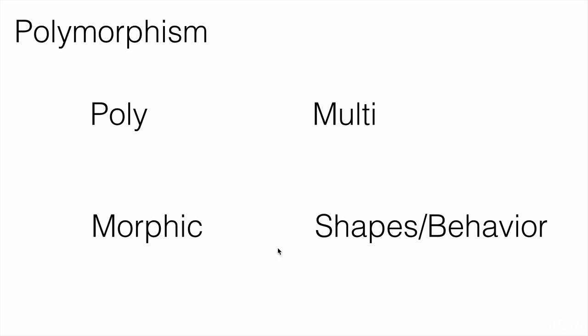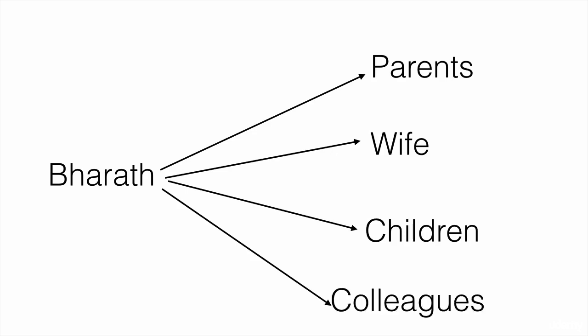To leave you with a real-life example, me, Bharat, as an object, when I interact with my parents or when I interact with my wife, children and colleagues, I behave differently. So the same object can output different behavior.